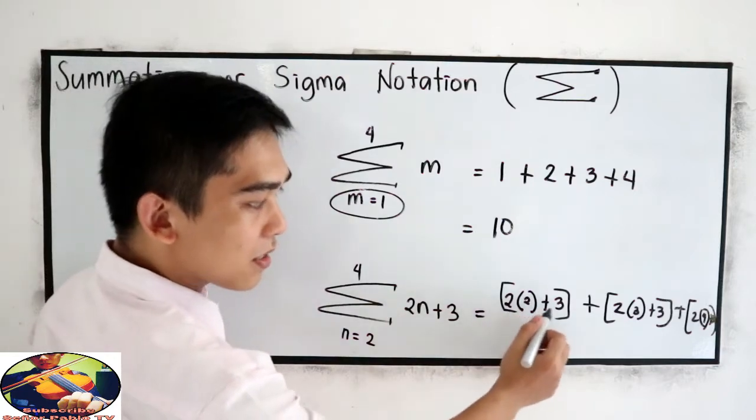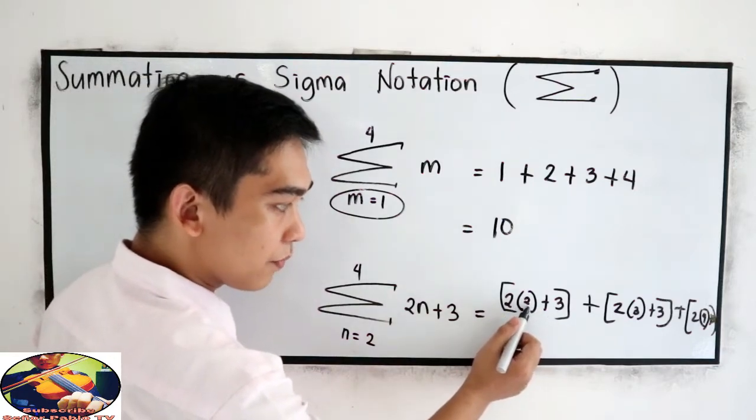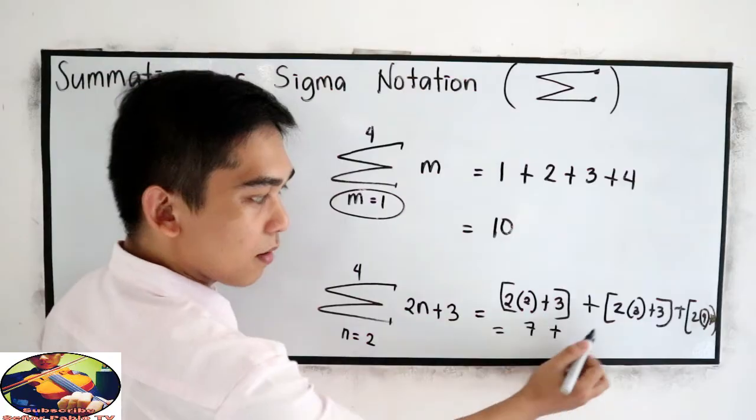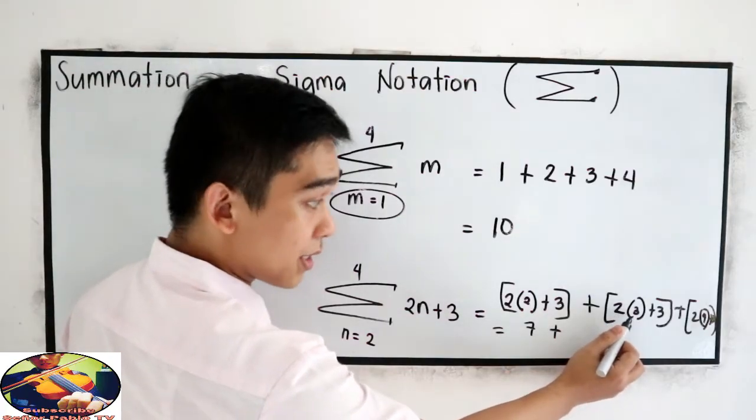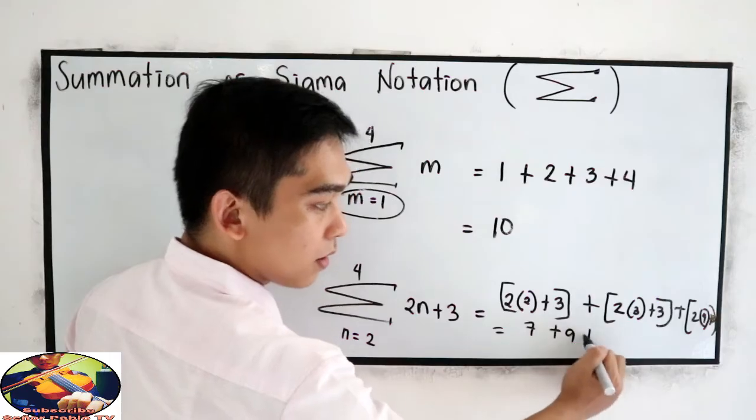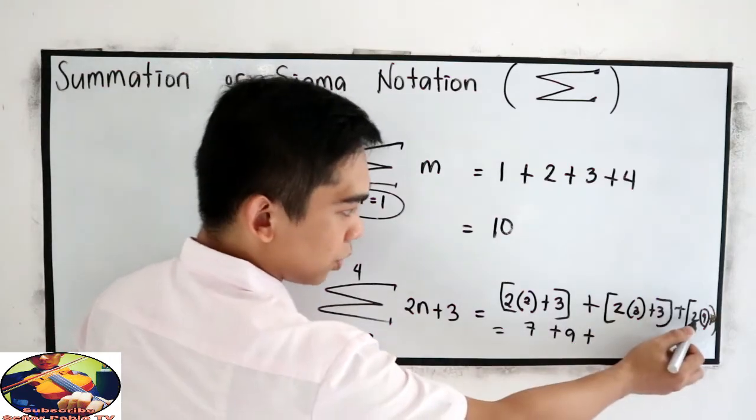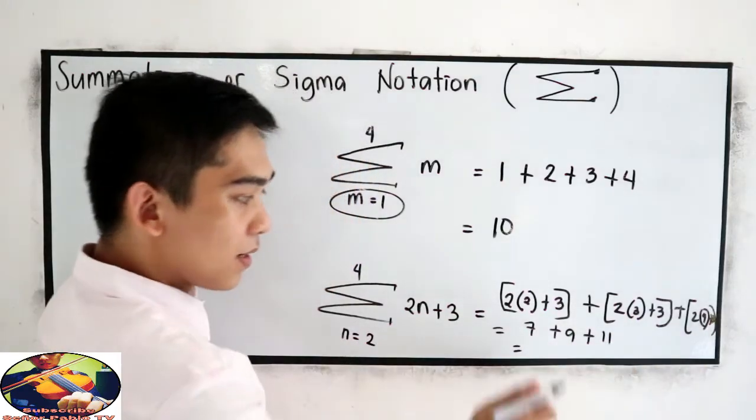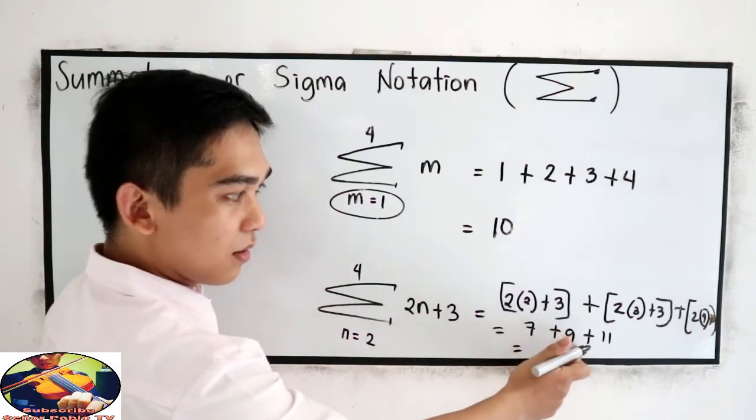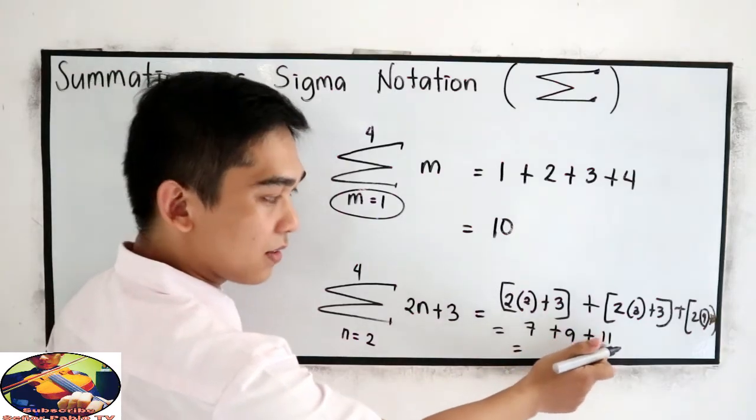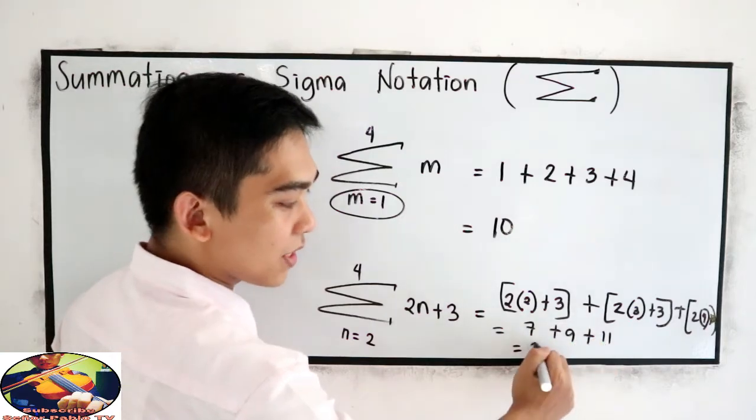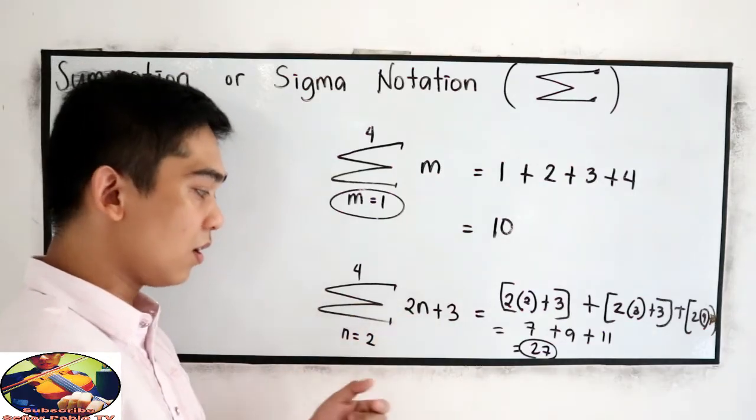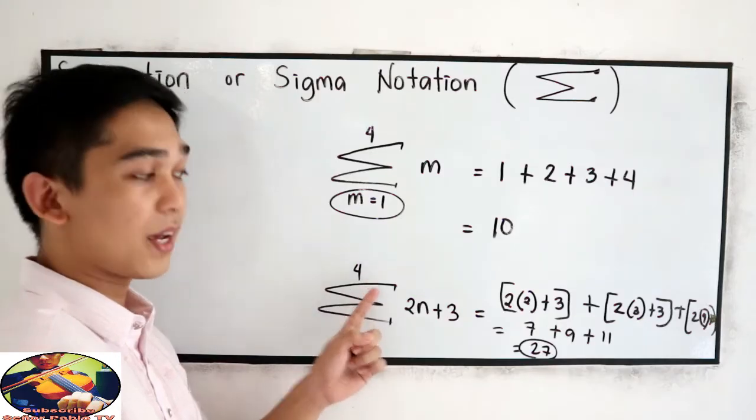Let us use the bracket sign. Let us simplify. 2 times 2, that is 4 plus 3, equals 7. Plus 2 times 3, 6 plus 3, which is 9. Plus 2 times 4 plus 3, equals 11. So the summation of 2N plus 3 from N equals 2 to 4 is 27.